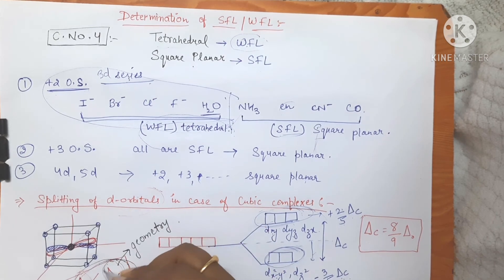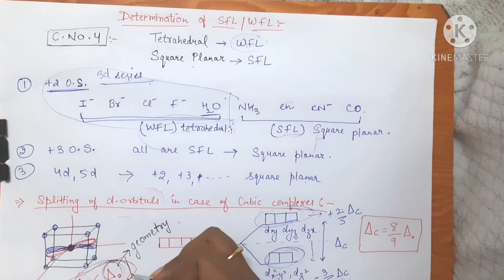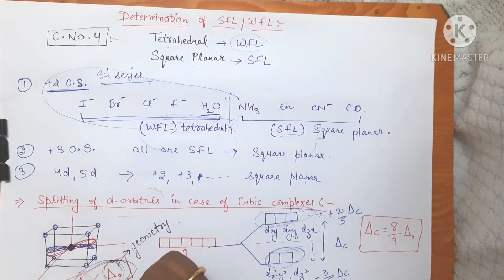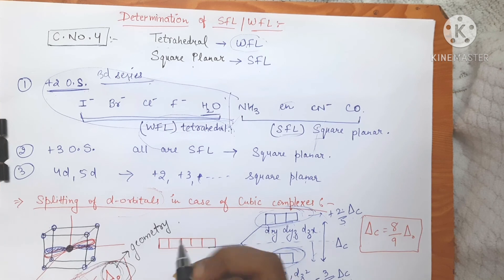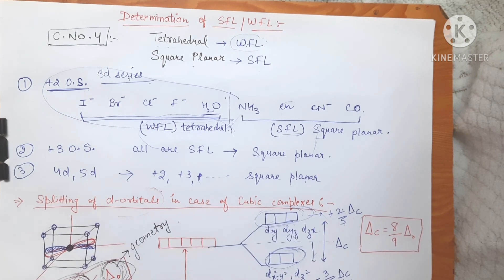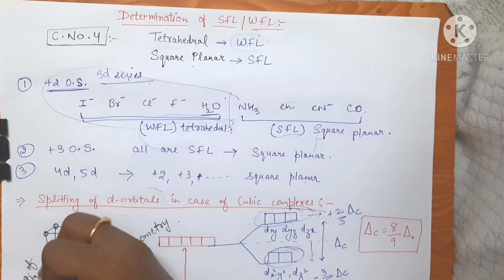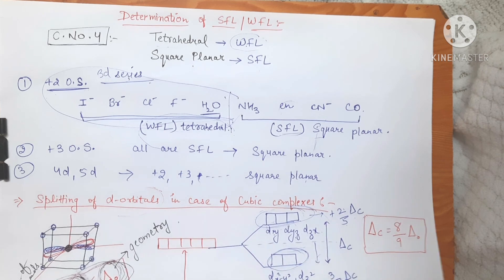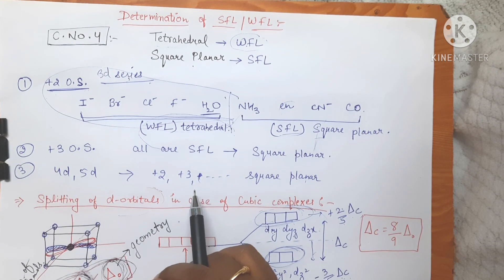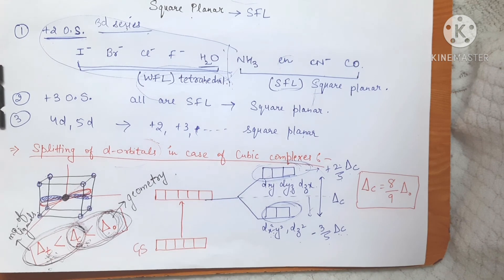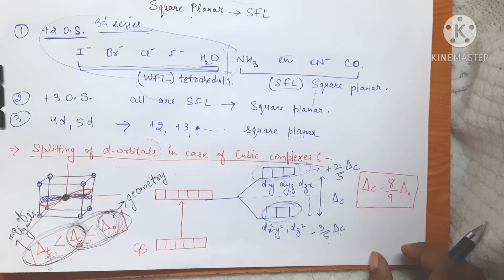In octahedral complexes, all ligands approach directly onto or in between the axis. But in both cubic and tetrahedral complexes, the ligands approach at an angle — that is why octahedral complexes have the highest splitting. Between cubic and tetrahedral, the number of ligands plays a vital role: the orientations are similar, but cubic complexes have double the number of ligands compared to tetrahedral, so splitting is more in cubic complexes.